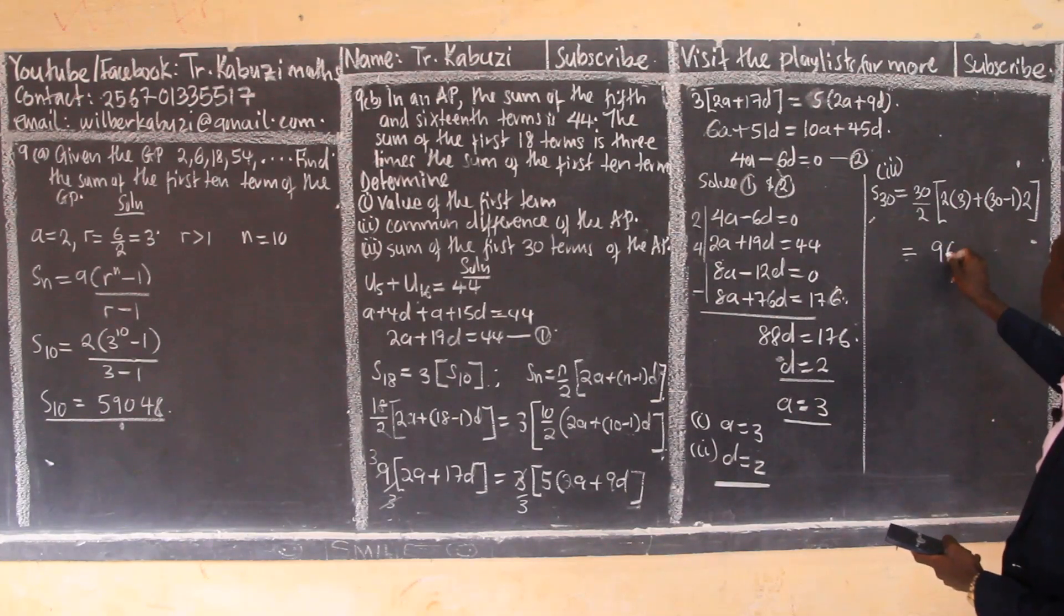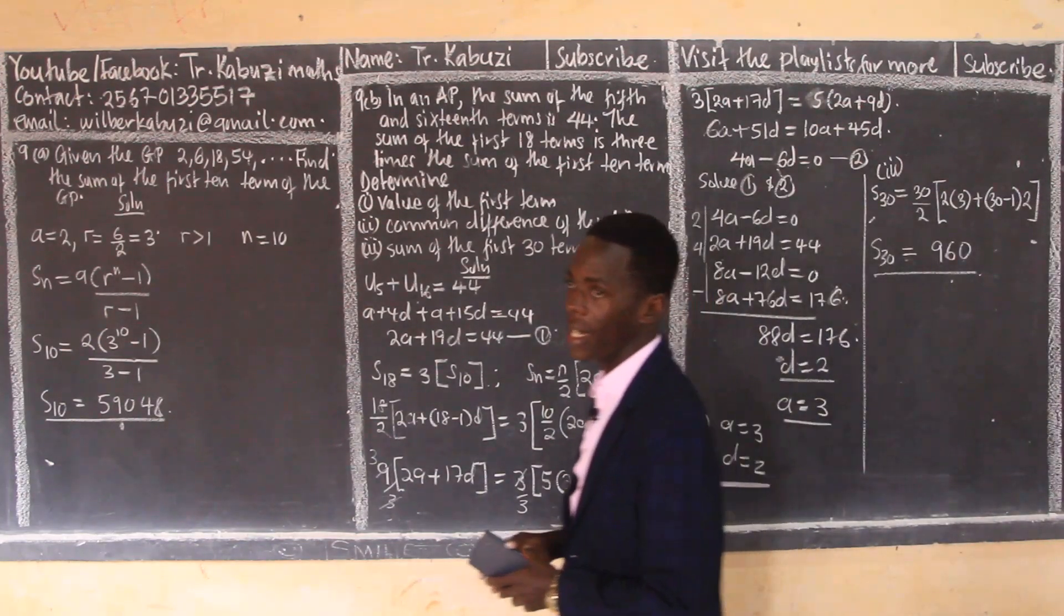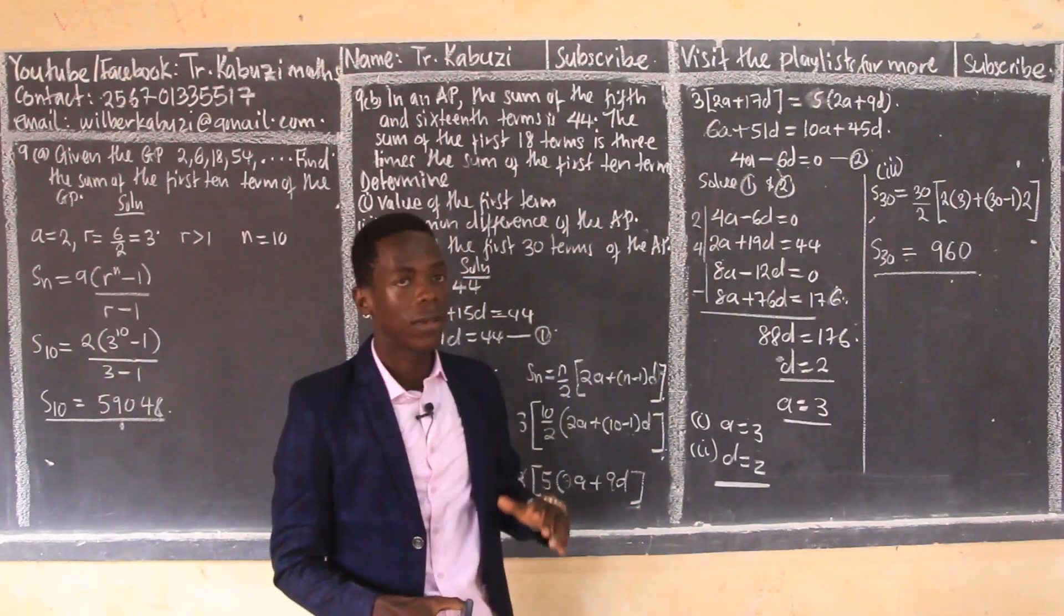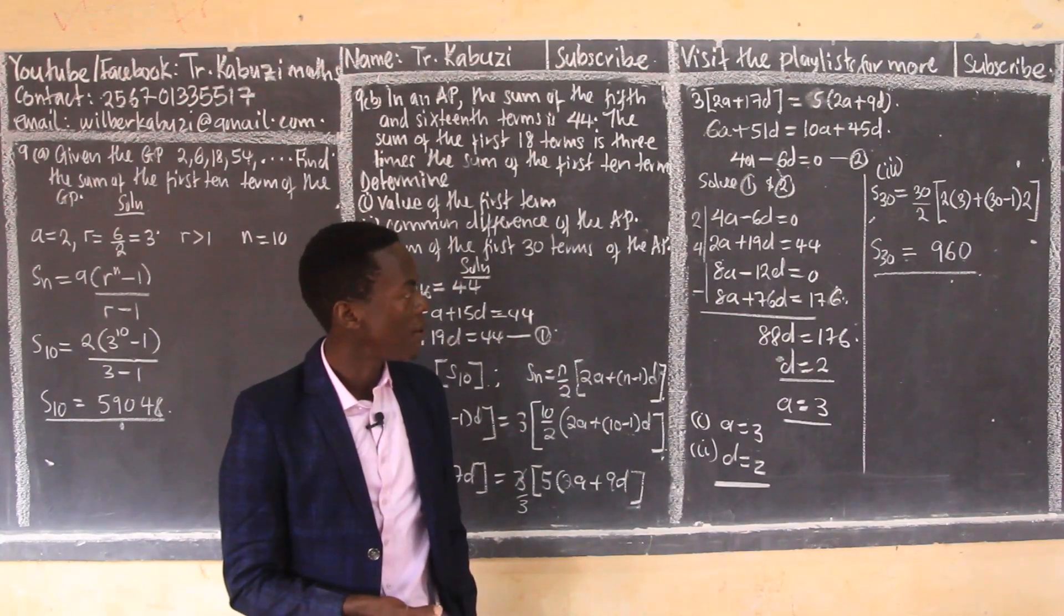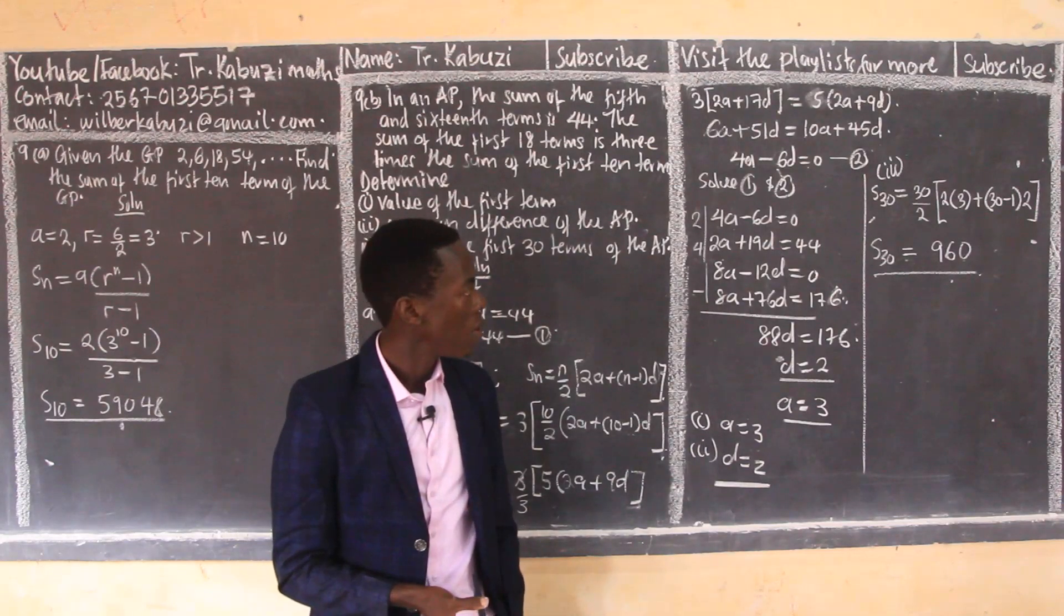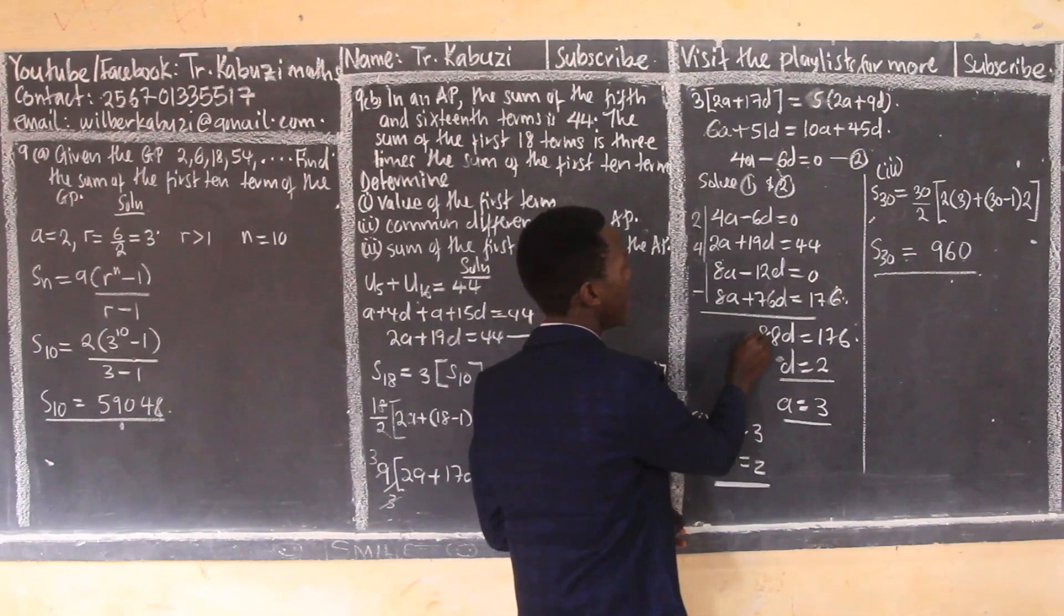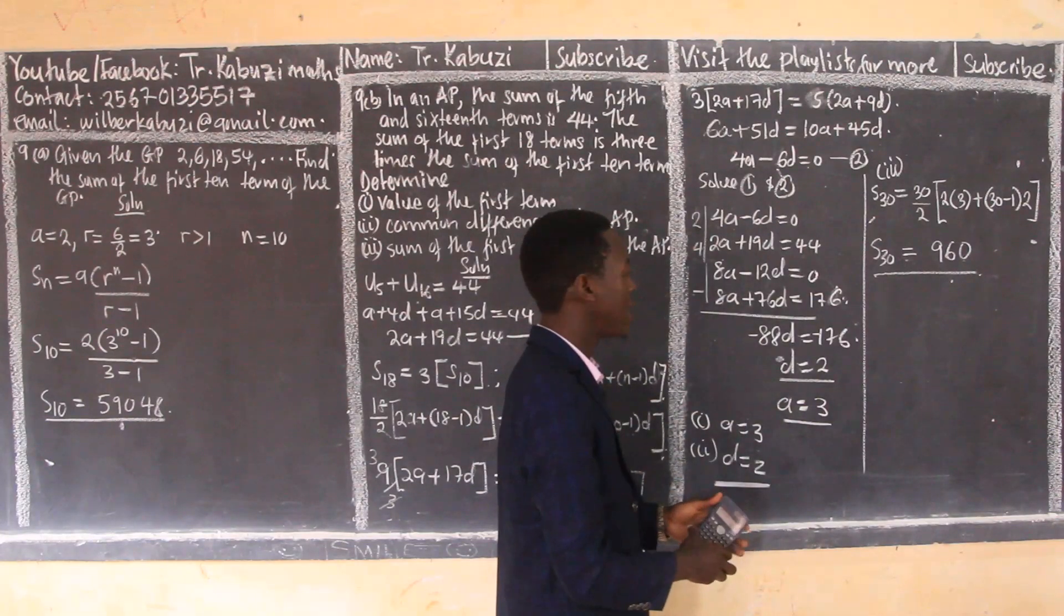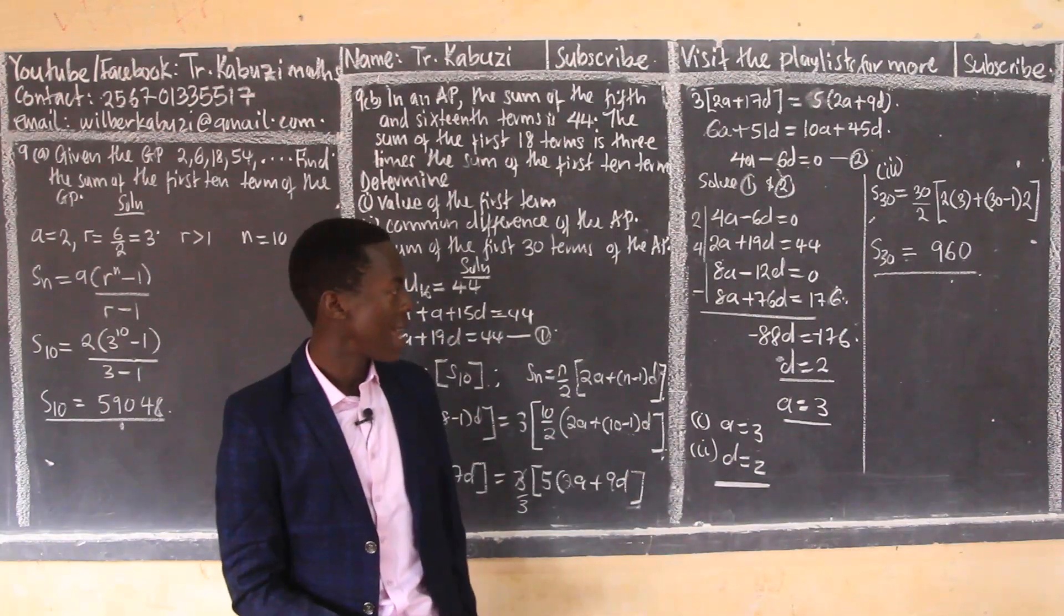So here I am getting 960. So my sum of the 30 terms, that becomes the answer. So that's how to handle that number nine, it was series. If you want a full topic about series, please feel free to go to the playlist and you'll find more things there. I wish you well. Anyway, here I was supposed to get negative, this one's supposed to be negative and this was supposed to be negative, but I skipped that step of dividing through by negative. That's why I had that, or if you want you can put your negative there in that order. That's it, I wish you well.